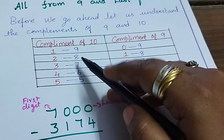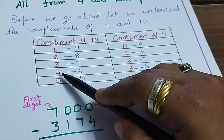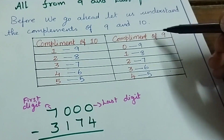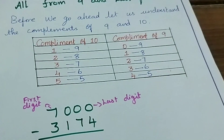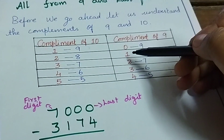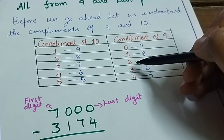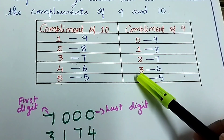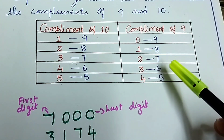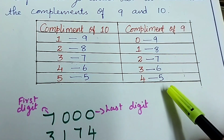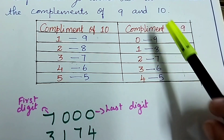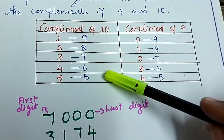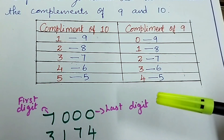Compliment of 2 is 8. Compliment of 3 is 7. Compliment of 4 is 6. Compliment of 5 is 5. Then the compliments for getting 9: compliment of 0 is 9, compliment of 1 is 8, compliment of 2 is 7, compliment of 3 is 6. You can also say it the other way: compliment of 6 is 3, compliment of 5 is 4. So these are the numbers. When you are adding them, you will get 9. If you remember like this, it will be easy for you to solve.